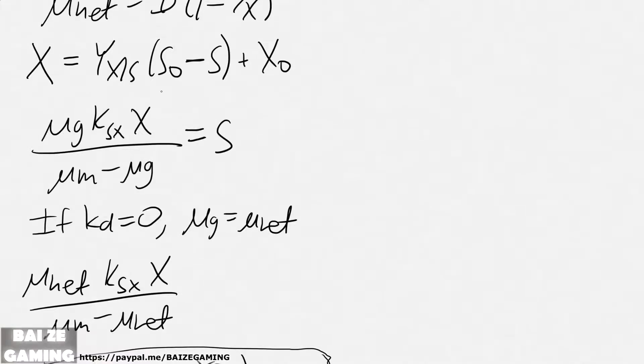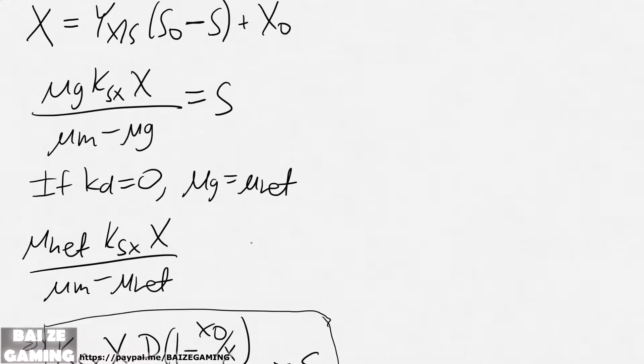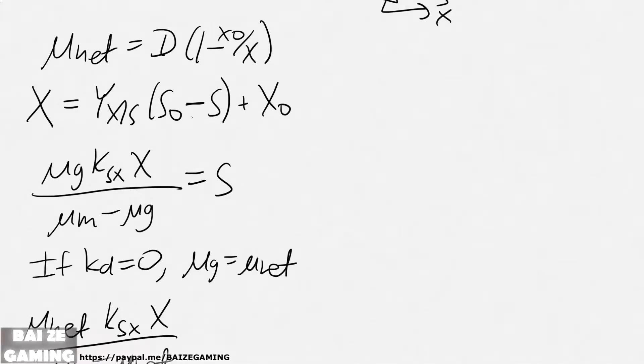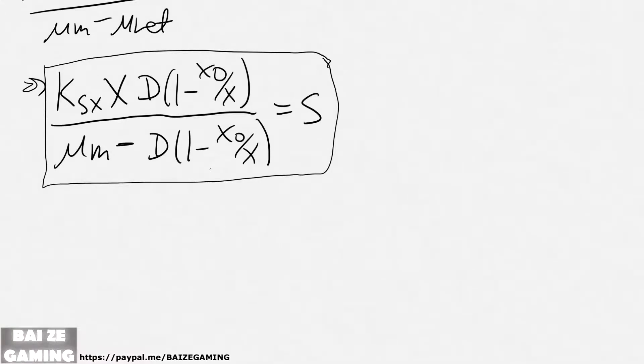But it'll still be in terms of S. It's going to be really messy to rearrange this explicitly. Instead, we'll just leave it implicitly. So those are the two equations you'll have. You have one for X, which is always the same, and then you'll have this one for S.